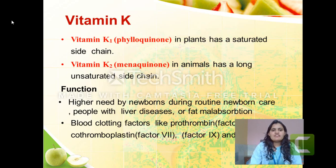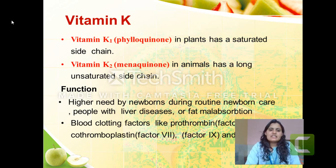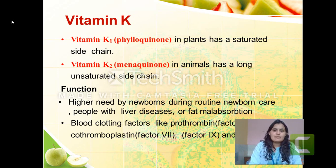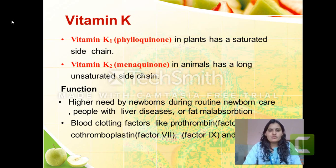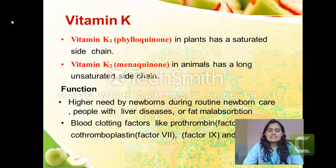The last fat-soluble vitamin is vitamin K. It can be obtained from plants or animals. If obtained from plants it is known as phylloquinone; from animals it is known as menaquinone. The main function is the formation of clotting factors. The clotting factors synthesized with vitamin K are factor 2 (prothrombin), factor 7 (co-thromboplastin), factor 9, and factor 10.